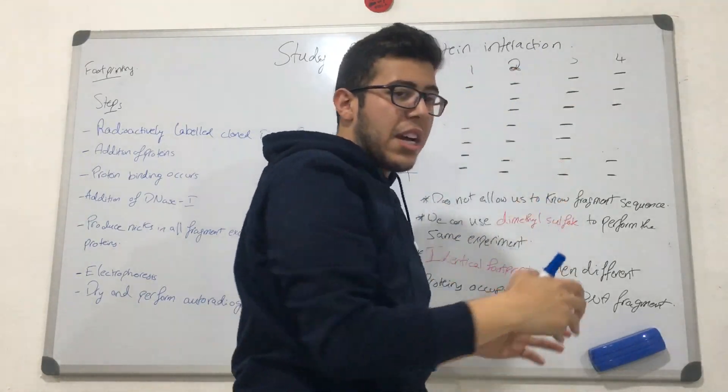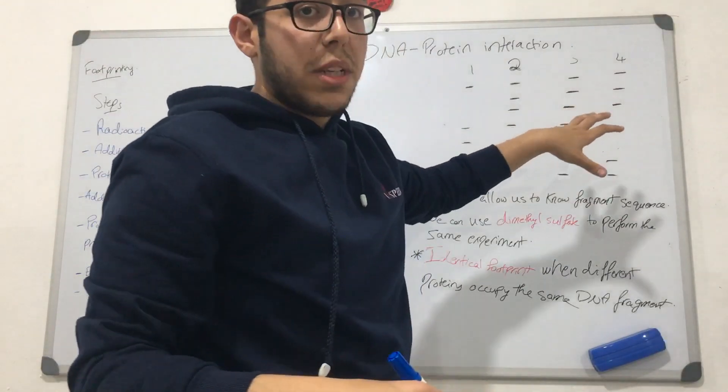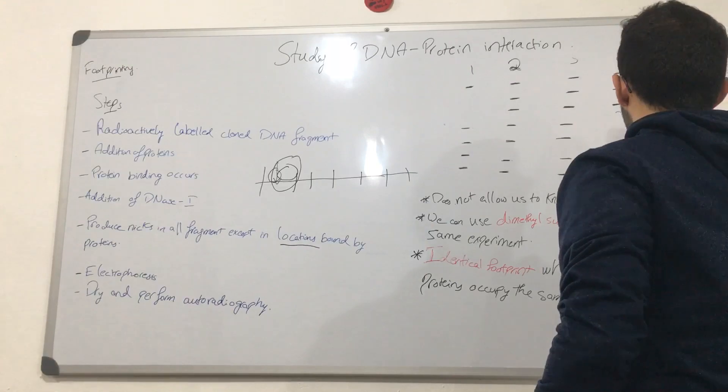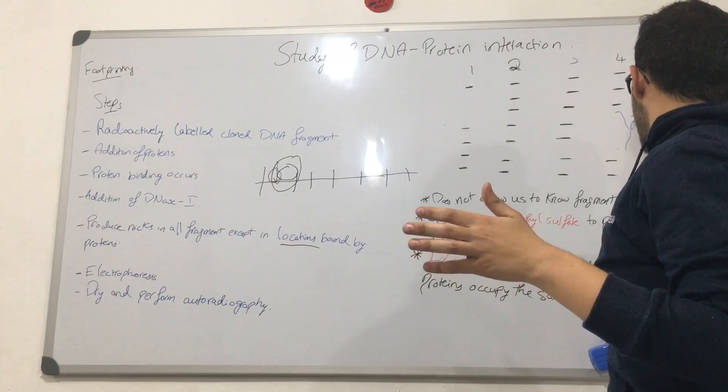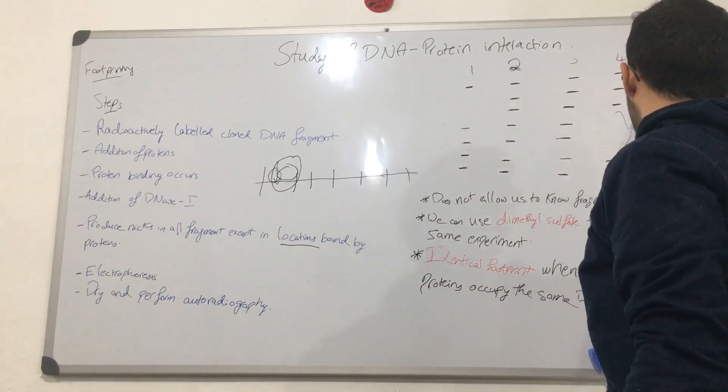However, here in this fragment that we can visualize, there are no proteins. How do we know that there's a protein here? It is because DNase cannot perform any cleavages in locations where there are proteins. Therefore, we can prove that these locations do not have any bound proteins.